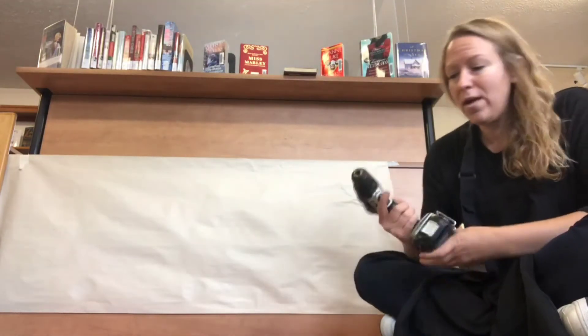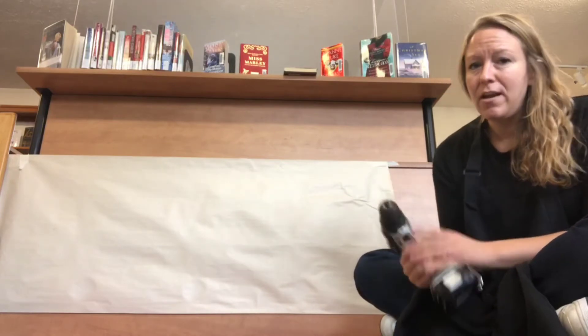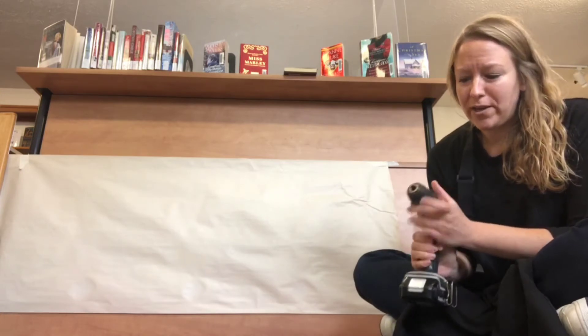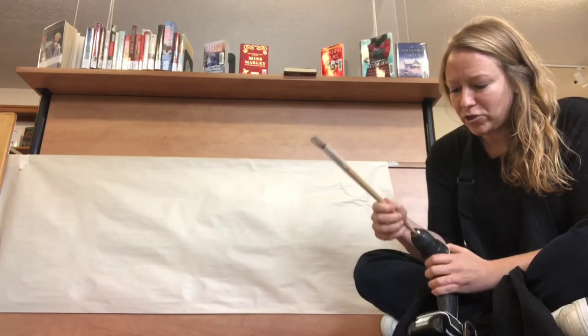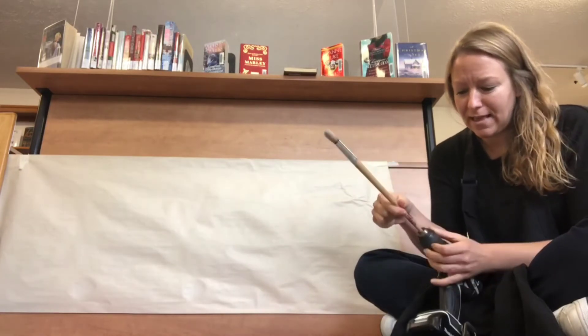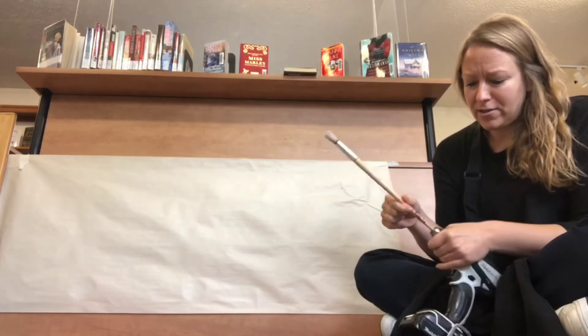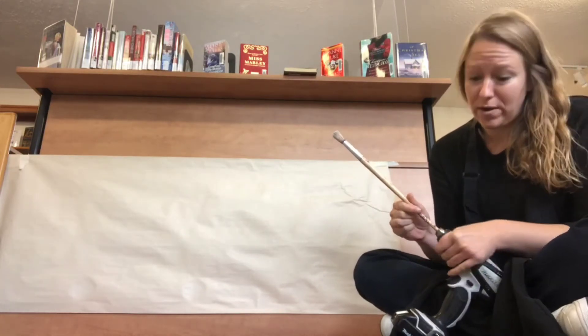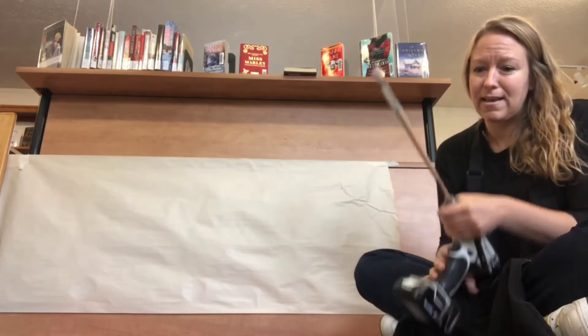This is the part where you're going to definitely need some adult supervision. The part where the drill bit would usually go is where we're going to be putting in the paintbrush. I'm just going to stick that in like that, and then you just tighten the chuck so that the paintbrush doesn't go anywhere and doesn't go flying when you're painting. Make sure that's nice and tight in there.